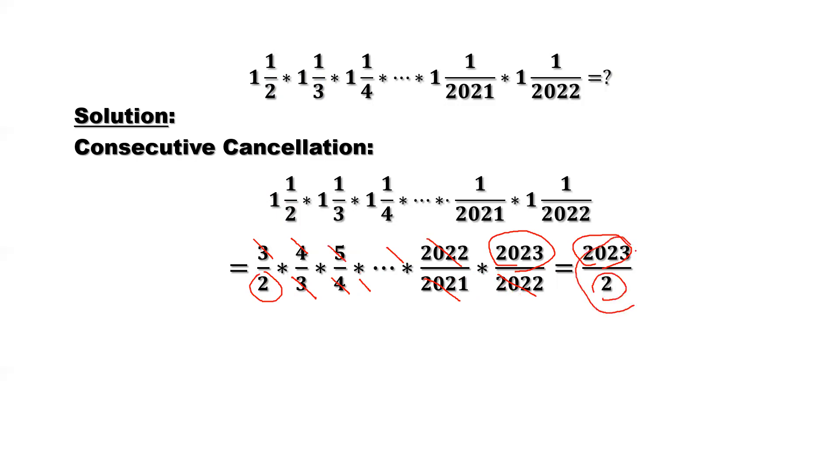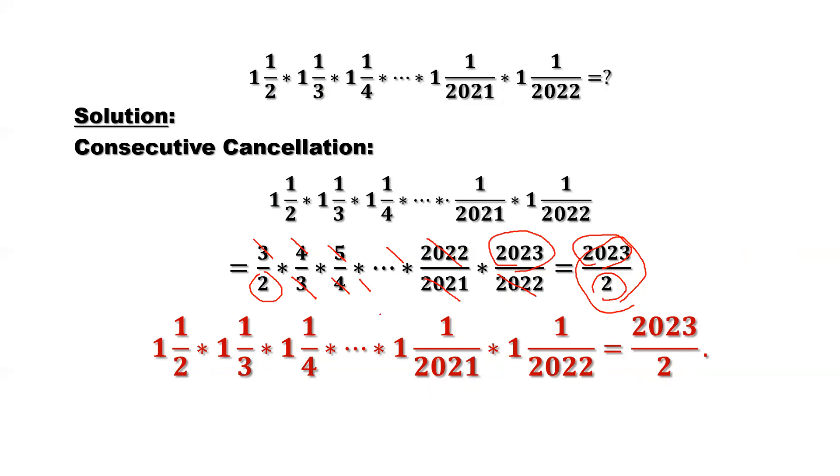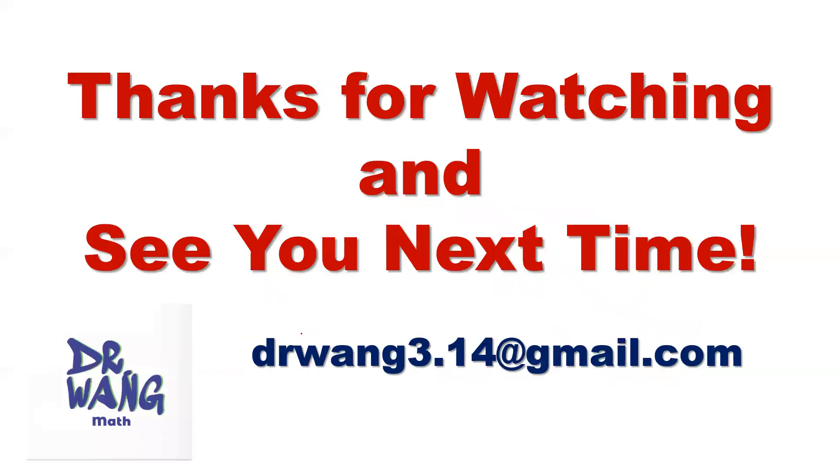So this is the answer. If you know this method, it is very easy. So here, that's the conclusion. The product of those items equals 2023 divided by 2. That's all. Thanks for watching, and see you next time.